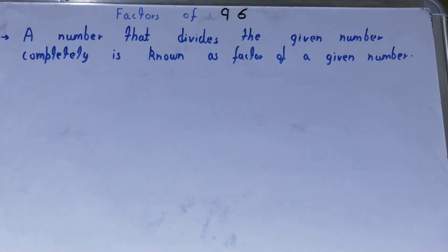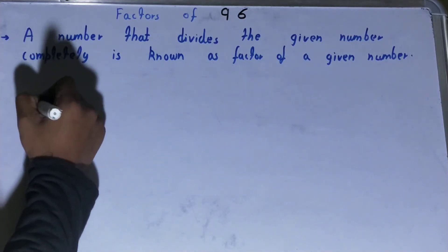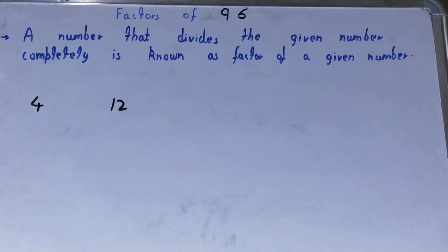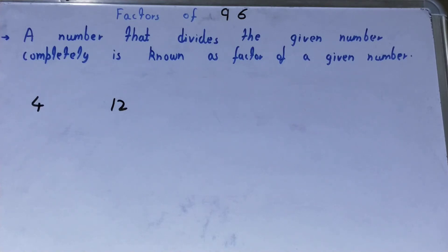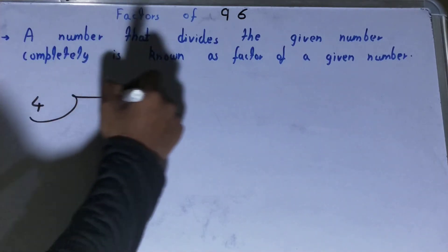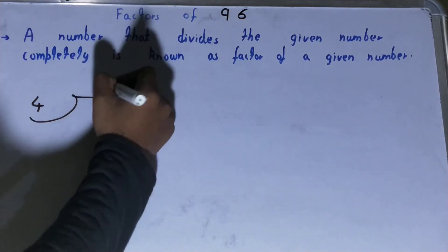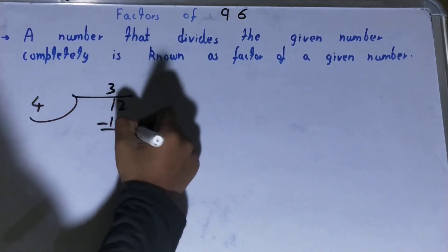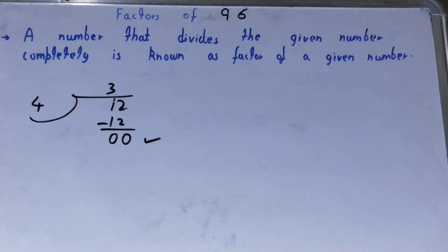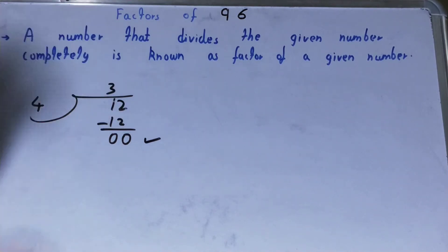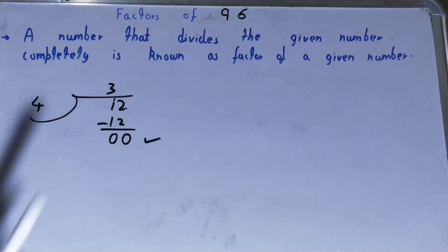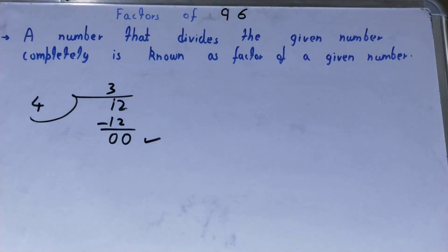Let me show you an example. Let's say I've got two numbers: 4 and 12, and you have to check whether 4 is a factor of 12 or not. We check by dividing — keeping 4 outside and 12 inside. When you divide it, you'll get the last remainder as zero. If and only if you get the remainder as zero, you can call that number a factor of the given number — in this case, 4 is a factor of 12.